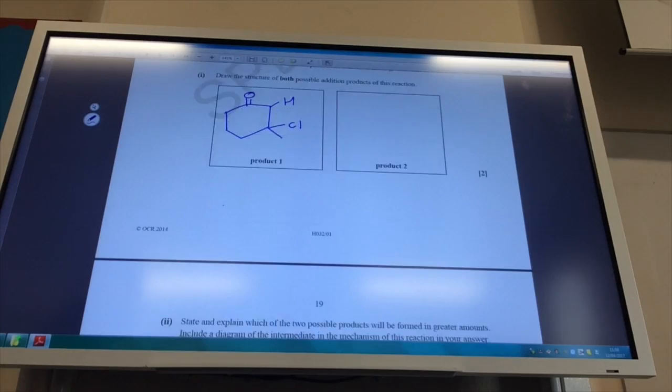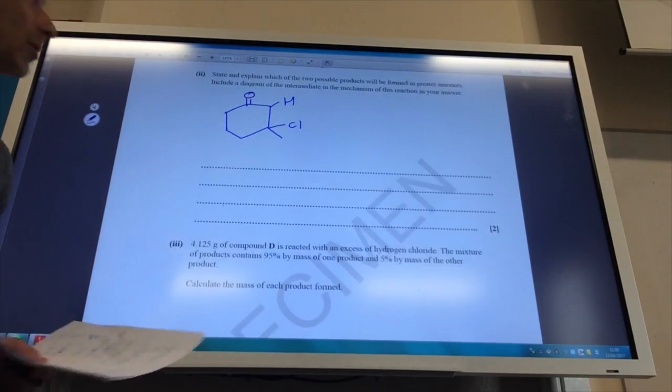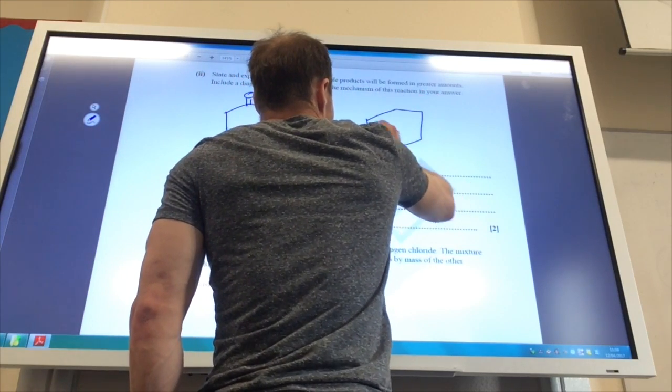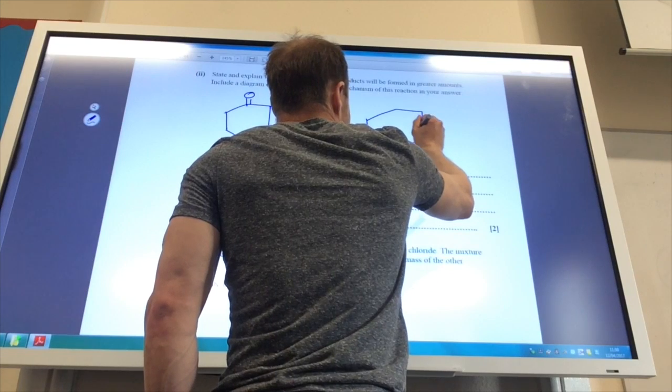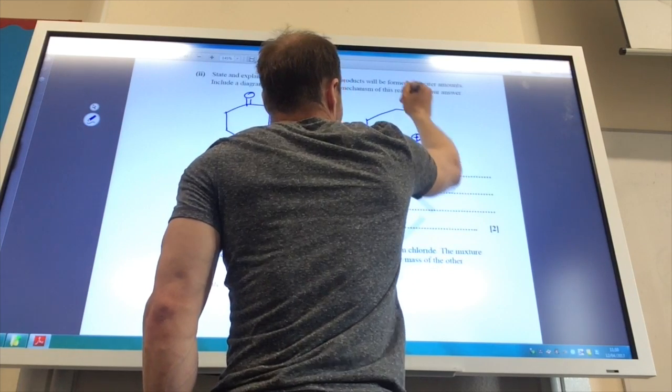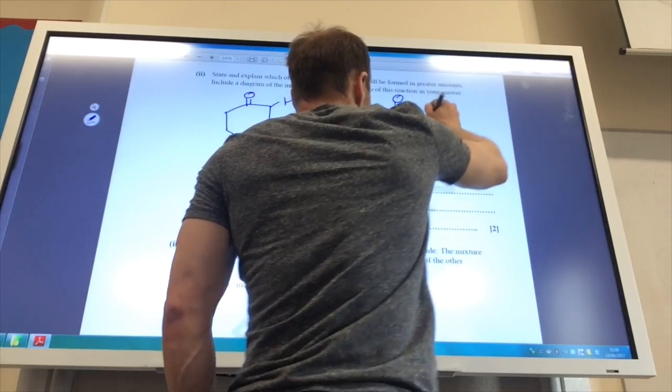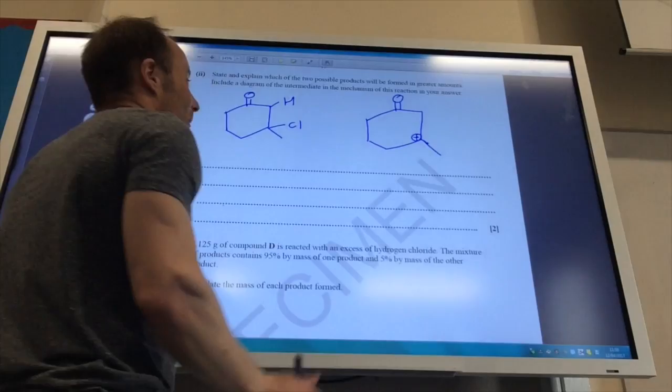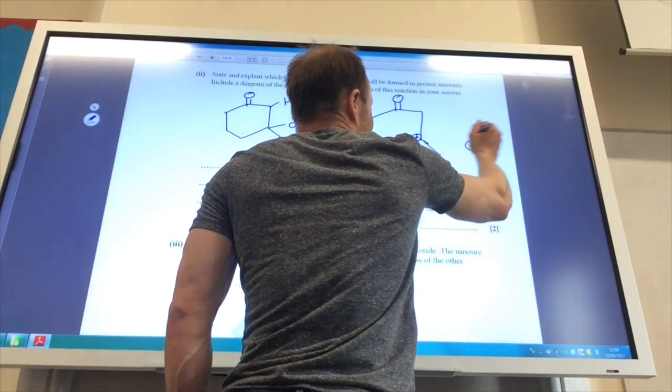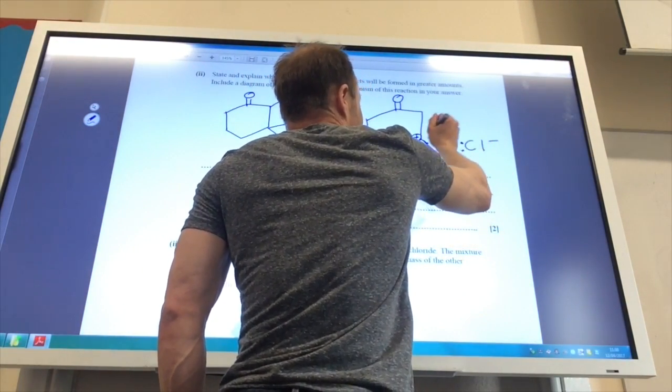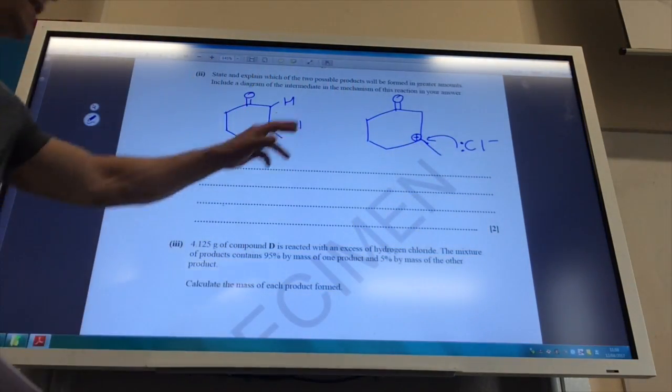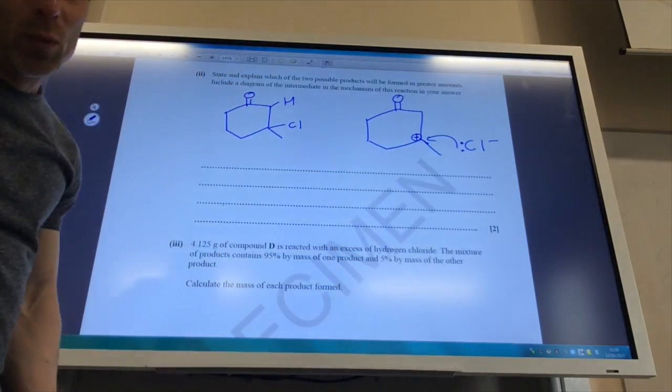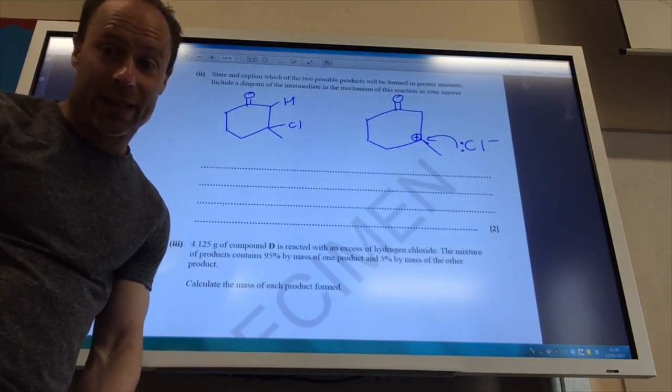So the intermediate carbocation produced is that one there, which is a tertiary carbocation, because my hydrogen added in there, and then remember the Cl- will be coming in to add there, like so. And that one is far more stable than the positive charge being on that one there. So it's because of a more stable tertiary carbocation being formed.